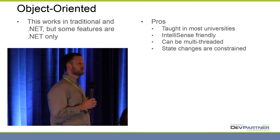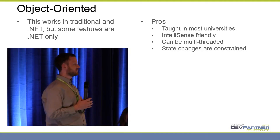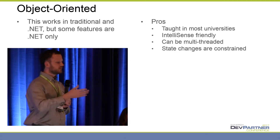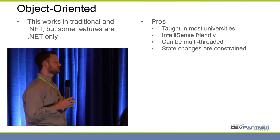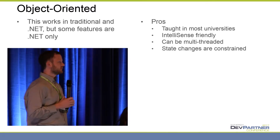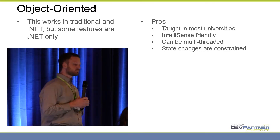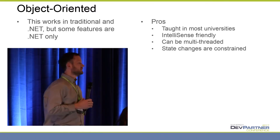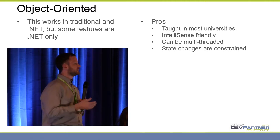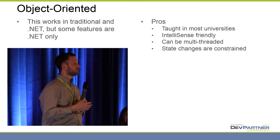It's very friendly to IntelliSense. You've got some kind of object, you press dot, it tells you all the things you can do with that object — that's definitely a plus. It's possible to multi-thread with object-oriented code; it's pretty difficult with procedural, but it starts to get a lot more doable in object-oriented. And your state changes are constrained. You start putting data inside of that class, and the only things that modify that data are functions inside of that class. If you want to know who changes this stuff, you don't have to look very far. It's a lot easier to manage that.